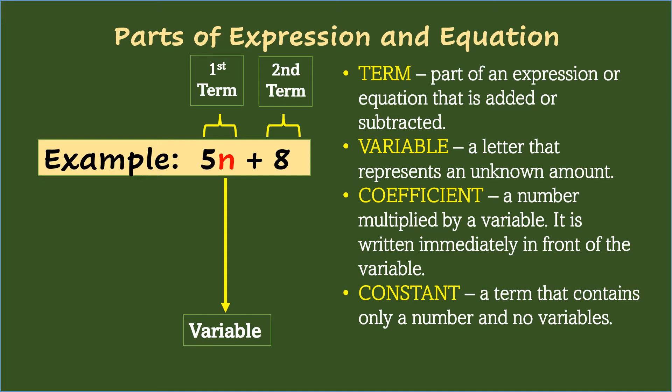Before the variable n is the number 5, called the coefficient. It is a number multiplied by a variable. It is written immediately in front of the variable.